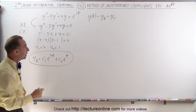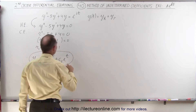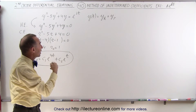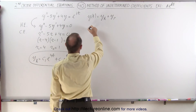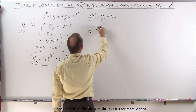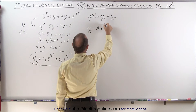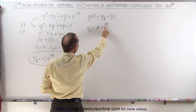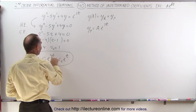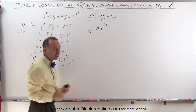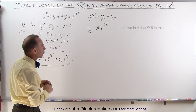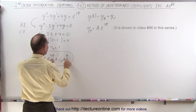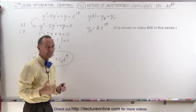Now we find the particular solution. We look at g(t), which is an exponential function, so the particular solution takes the form: a*e^(3t). Before proceeding, we confirm that e^(3t) does not appear in the homogeneous solution — if it did, we would need an augmented approach. Since it doesn't appear there, we can proceed with this technique.